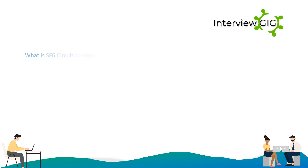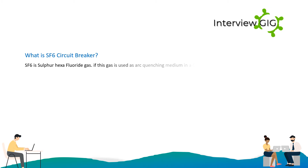What is an SF6 circuit breaker? SF6 is sulfur hexafluoride gas. If this gas is used as the arc quenching medium in a circuit breaker, it is called an SF6 circuit breaker (SF6 CB).